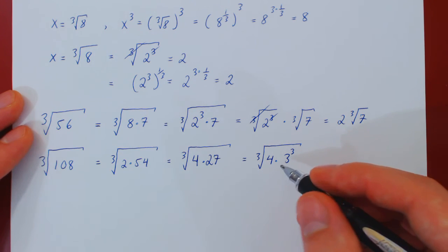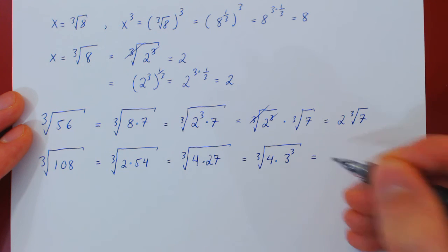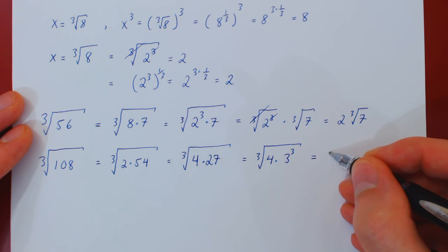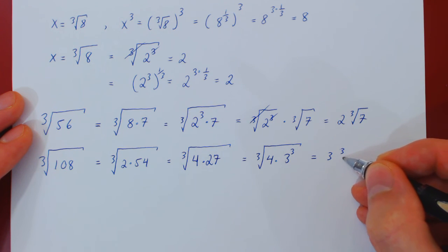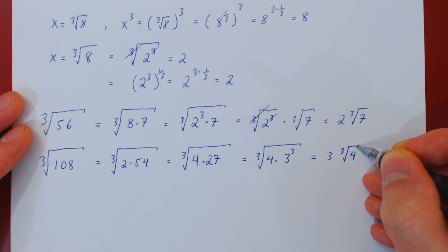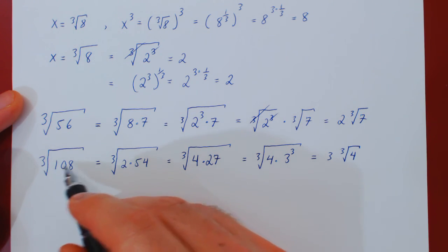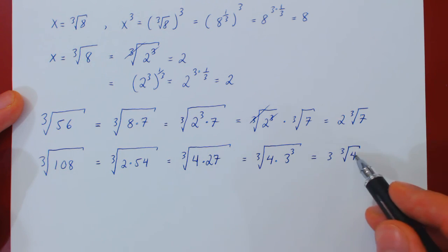And now we will distribute the cube root on both terms. So the cube root of 3 cubed will give us a 3 times the cube root of 4 will stay cube root of 4, as 4 is not a perfect cube. So once again we have simplified from the cube root of 108 to 3 times the cube root of 4, a much simpler expression.